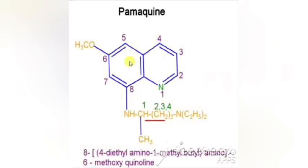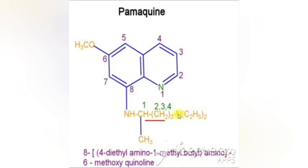The next drug is pamaquine, also an 8-aminoquinoline. It has a quinoline nucleus with an amino group at the 8th position and a methoxy group at the 6th position. With the amino group at the 8th position, a butyl chain is attached — 1st carbon has a methyl and 4th carbon has a diethylamino group. The difference from primaquine: in pamaquine the 2 hydrogens of the terminal amino group are replaced by 2 ethyl groups.